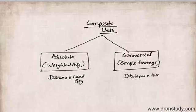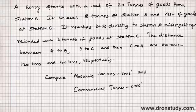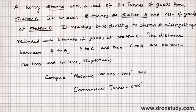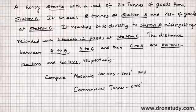The second method is commercial, which is the simple average tons kilometers, arrived at by multiplying the total distance by the average load quantity. In the next session we'll take an example to understand composite units. Let's take this case study to compute absolute tons kilometers and commercial tons kilometers.